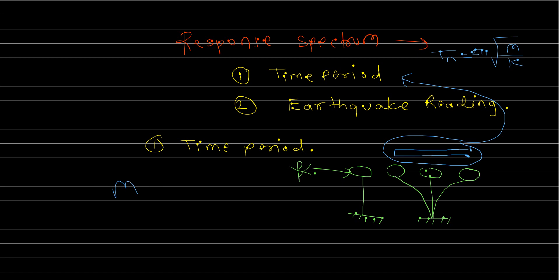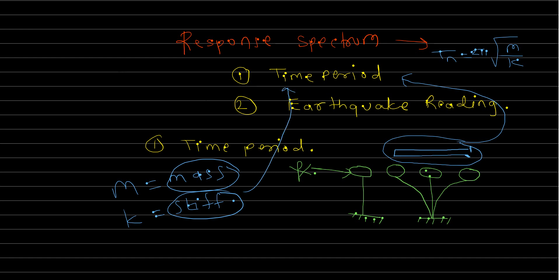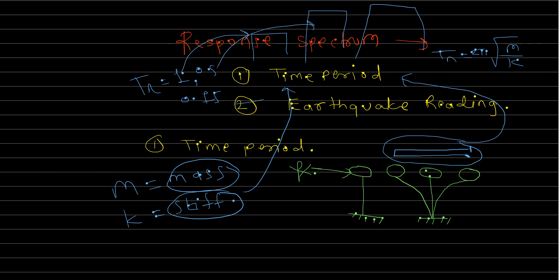The formula for time period is 2π√(m/k), where m is the mass of the structure and k is the stiffness. So for a building, if you know the mass and stiffness you can calculate the time period. Different buildings have different time periods — we will talk in terms of time period values such as 1 second, 0.5 second, 0.75 second, rather than describing specific structures.